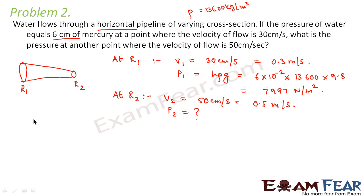So how do we calculate that? We will apply Bernoulli's equation. So according to Bernoulli's equation, P plus half rho V square that is kinetic energy per unit volume plus rho GH that is potential energy per unit volume is equal to constant.